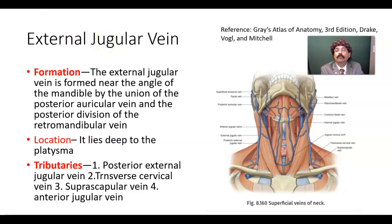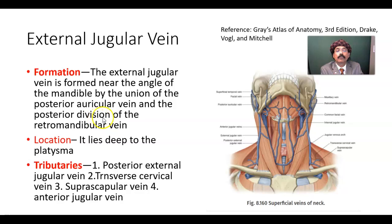First of all, we should go through the formation of the external jugular vein — how and where it is formed. The external jugular vein is formed near the angle of the mandible by the union of the posterior auricular vein and the posterior division of the retromandibular vein. Here is the posterior auricular vein, the posterior division of the retromandibular vein, and here is the formation of the external jugular vein.